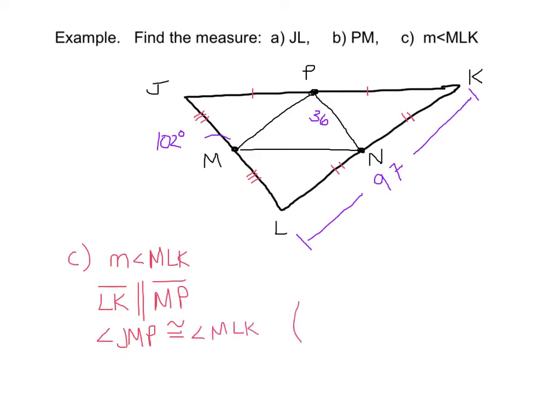We can say that angle JMP is going to be congruent to angle MLK. Now how did I know that? Well think about picking up JMP and just sliding it down. It's the exact same angle. The reason why, these are corresponding. And this is the corresponding angles theorem.